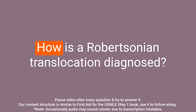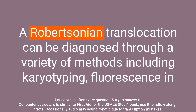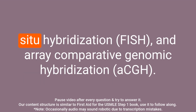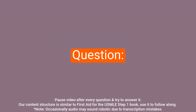Question: How is a Robertsonian translocation diagnosed? Answer: A Robertsonian translocation can be diagnosed through a variety of methods including karyotyping, fluorescence in situ hybridization, and array comparative genomic hybridization.